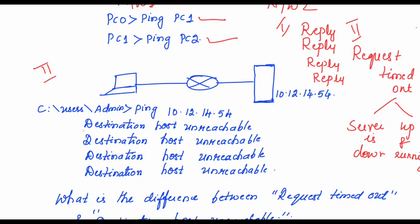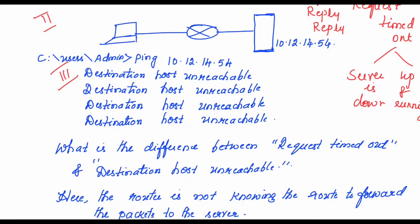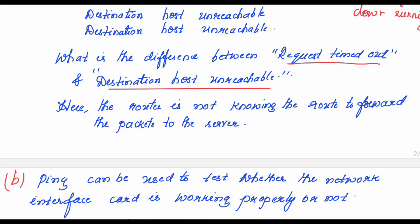The output can be destination host unreachable. This is the third type of output for the ping command. What is the difference? Normally when we are not able to reach the server, we are getting request timed out. Suppose if you are getting the output destination host unreachable, then what is the difference between these two? In this case, destination host unreachable, the router is not knowing the route to forward the packets to the server. The server is up and running, but the router which has to forward the packet is not knowing the path or it is not knowing the route to forward the packet to the server. This normally happens when you want to ping over an internet.